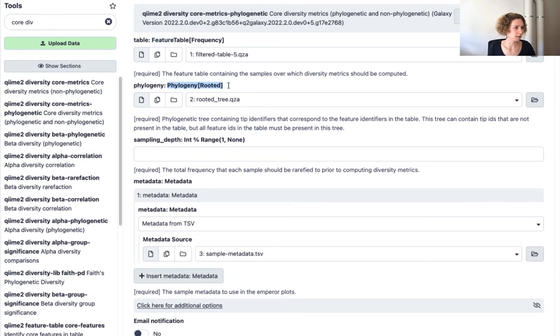So diversity core metrics phylogenetic, and Galaxy automatically recognizes the artifacts it needs. So our feature table, it recognizes the phylogeny and the metadata.